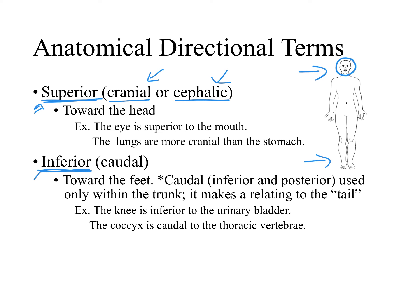Inferior can also be called caudal, but caudal can only be used if we are talking within the trunk, because caudal makes reference to the tail — the coccyx, the tailbone — which is basically at the end of the trunk. So caudal refers to something that is inferior and also posterior, because your coccyx is in the back.